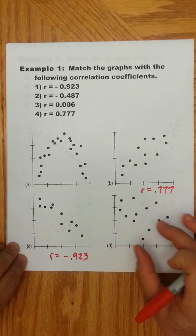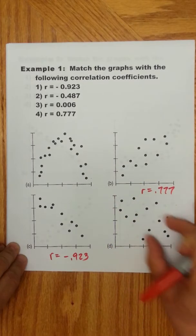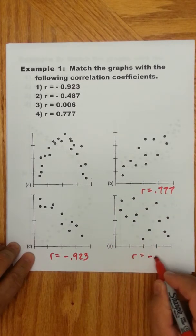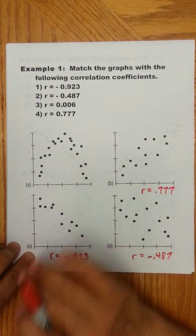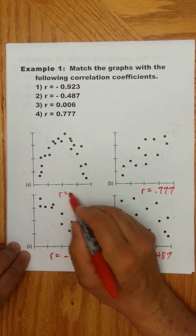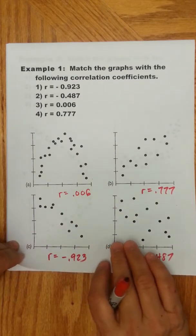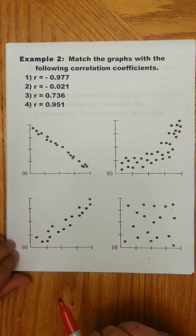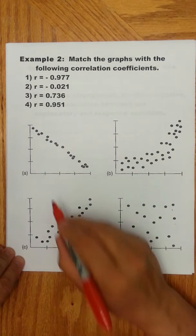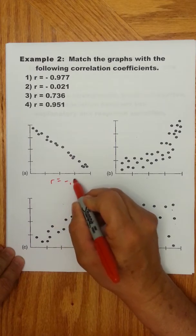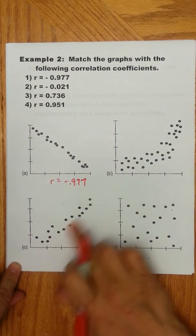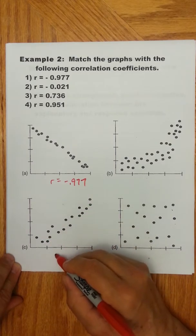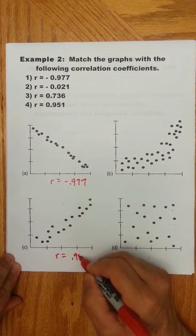Then I look at the remaining three graphs, and I say, which would best be fit by a line? And I can see b would. And it's a positive. So I want to go the highest number closest to positive 1, and that's 0.777. Between these two, this is better fit by a line. You know, you can see it's negative. So this would be r equal negative 0.487. And honestly, by process of elimination, I would know this is 0.006. Now, let's take a look, pause the video, and go ahead and match these, and see what you get. Really pause it.